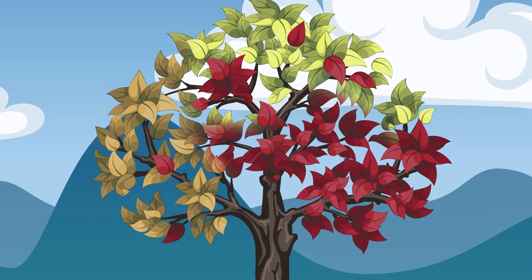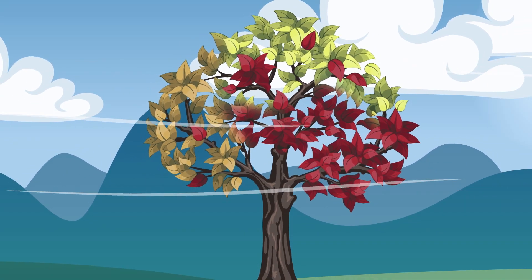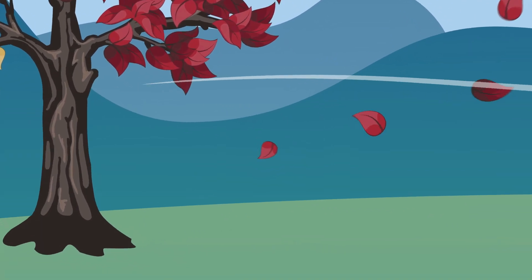All those good nutrients being leached out of the leaves causes them to dry out and change color. Now that there's nothing left for the dry, damaged leaf to do, the tree cuts it off and waits for them to fall off on their own.